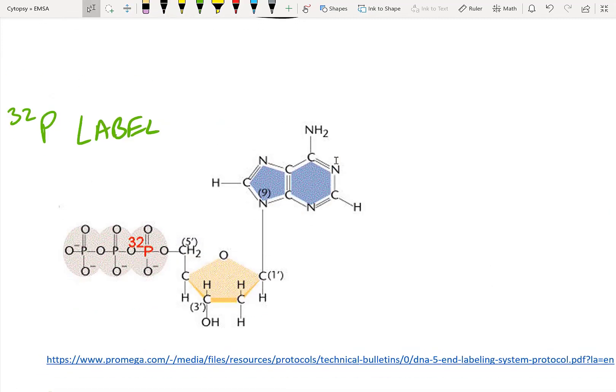A second method, which is kind of old school but also very common, is to add a P32 label onto your DNA. You can see kind of a similar thing. So you've got a DNA molecule, and here we're going to incorporate P32 instead of a regular phosphorus.